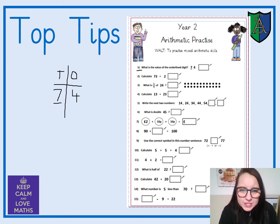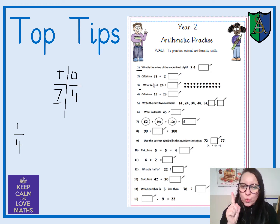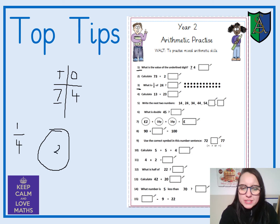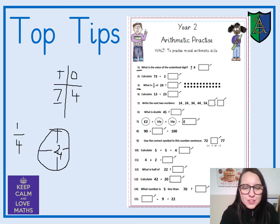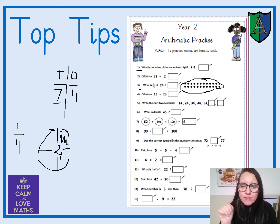This one is asking us to find one quarter of 24 — so it's asking us to half 24 and then half it again to find one quarter. Remember we could use our circle method where we put 24 in the middle, then half it — half of 24 — and then half that number to find one of our quarters. You could use that method, or you could simply split the picture into half and then half again.